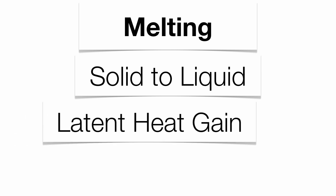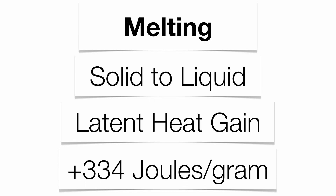The first type of phase change is melting. All this information is found in your reference table on page one. Melting is taking a solid and changing it to a liquid. This is a latent heat gain, meaning energy from the atmosphere is taken in. The amount of heat energy required is 334 joules per gram.